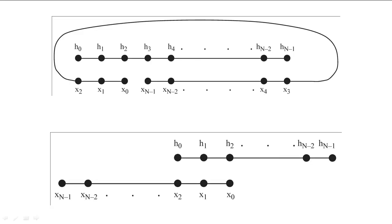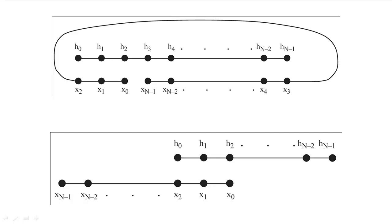In the top diagram, we see how cyclic convolution loops the later samples of the input around the filter coefficients. To compute a linear convolution, we want to eliminate the effects of this loop around.